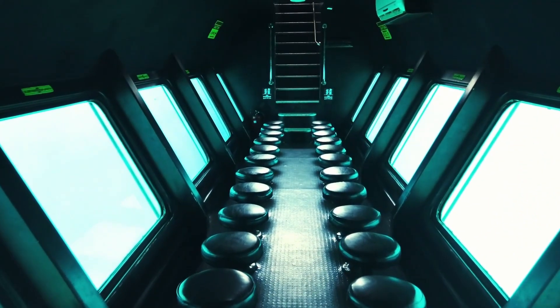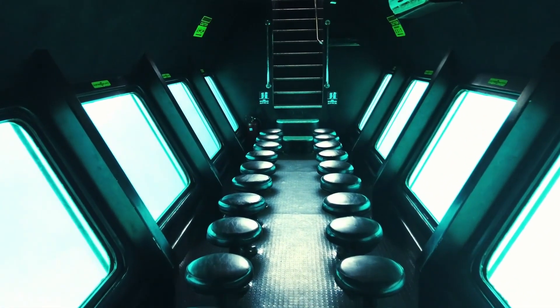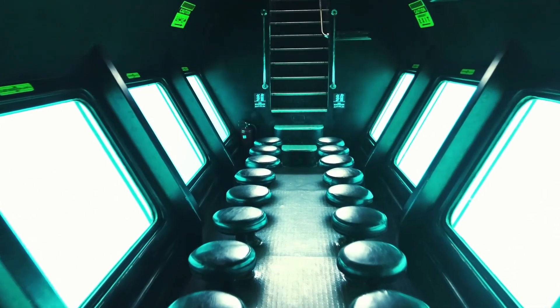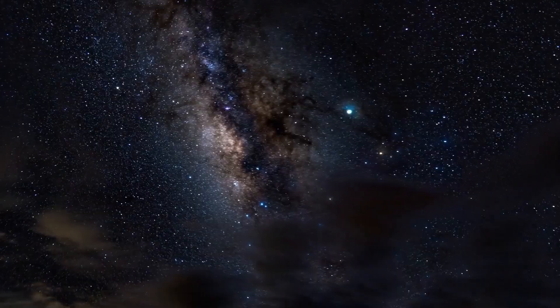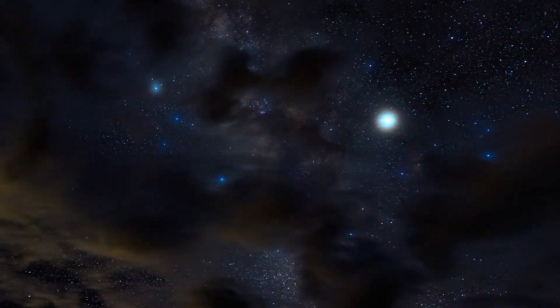It sent back stunning images of Neptune's deep blue atmosphere with its swirling storms and the fastest winds in the solar system, which can reach speeds of up to 1,200 miles per hour.